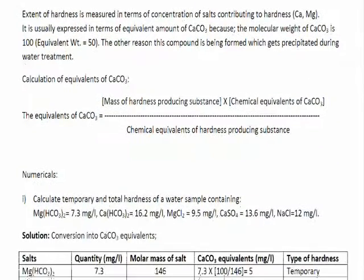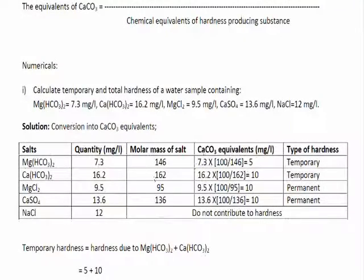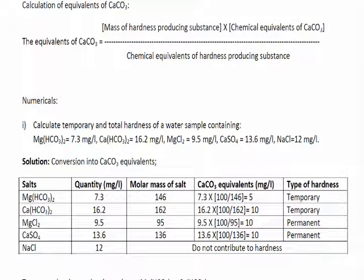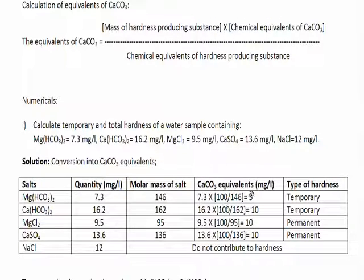Then calculate the CaCO3 equivalence for each hardness producing salt by using the above formula — that is, mass of the hardness producing substance divided by the molar mass of that salt. You will get the answer in milligrams per liter, or ppm.